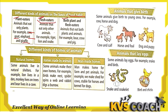Flesh eaters eat only flesh, meaning meat. Animals that eat only other animals are known as flesh eaters. Examples are tiger, lion, and snake — they only eat other animals, not anything else.